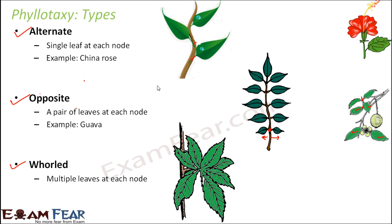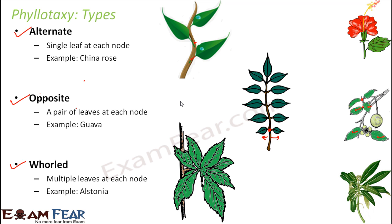The third type of phytotaxy is whorled phytotaxy. Here we have multiple leaves at each node — a tuft or bunch of leaves at one node. An example is Alstonia, where you can see multiple leaves arising from the same node. Many ornamental plants also show this kind of whorled phytotaxy. So broadly, in some plants it is alternate, in some it is opposite, and in others it is whorled phytotaxy.